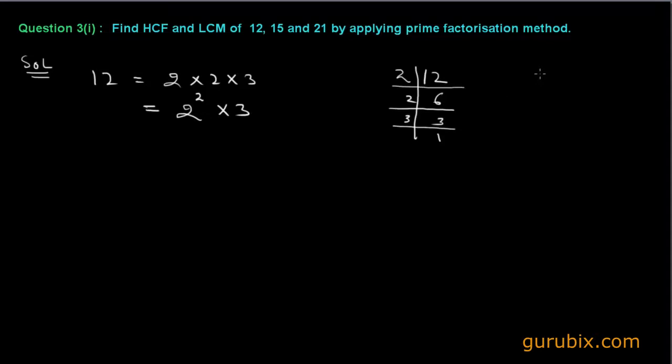Now we factorize 15. We know that 15 can be divided by 3 and 5 both. So 15 can be written as 5 into 3.